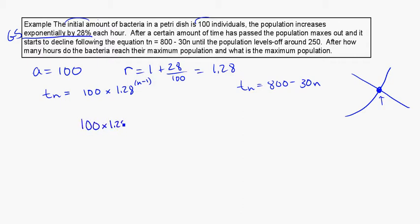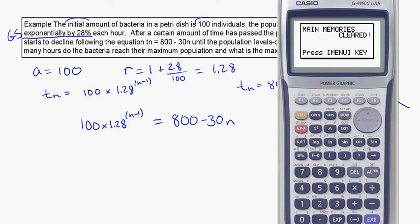So what we can do is just set these two equations equal to each other. 100 times 1.28 to the n minus 1 is equal to 800 minus 30n. So let's give it a view and see what happens. We can put this straight into our solver.